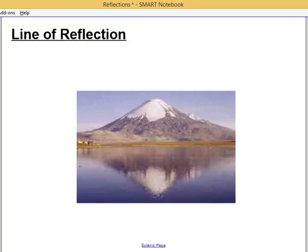We see lines of reflection in nature all the time, like a mountain being reflected in a lake. Here, the actual horizon itself would be our line of reflection. So this would be a horizontal line of reflection.